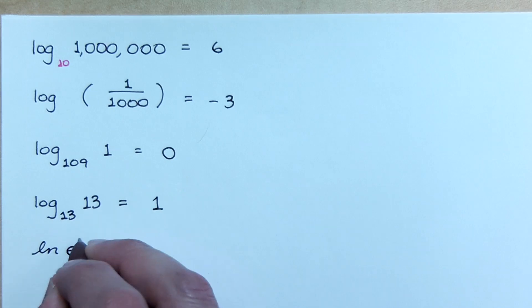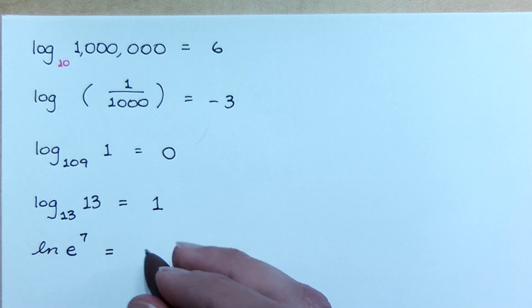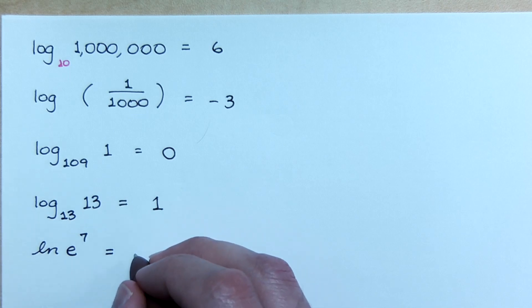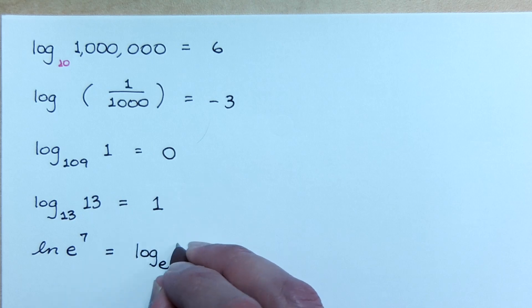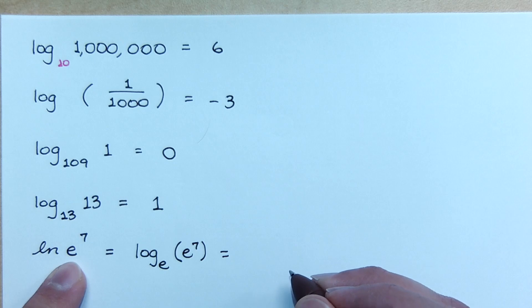How about natural log of E to the seventh? What does natural log mean? It's that constant, whatever his name is. Well, natural log means log base E, right? Of this guy, E to the seventh. So what's your answer? That's right. Big subscript. Seven. Seven, right?